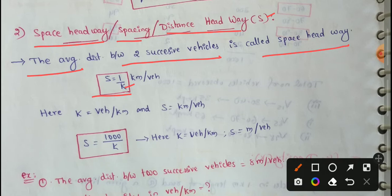Traffic density has units vehicles per kilometer. So the inverse or reciprocal is S equal to kilometer per vehicle. S equals one by K kilometers per vehicle are the units.